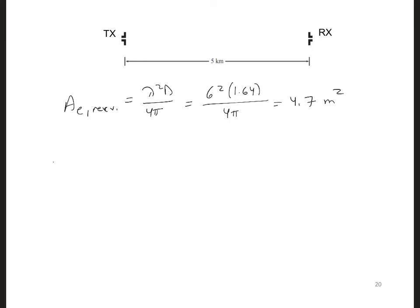And then P received is equal to P intercepted is S, which is 764 times 10 to the minus 9, and we multiply that by the effective area, 4.7, and we get 3.6 microwatts.